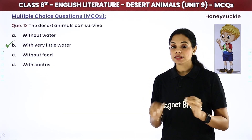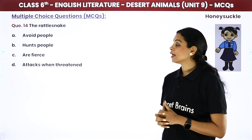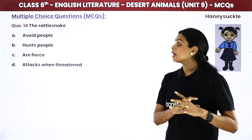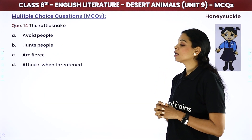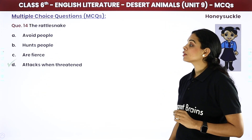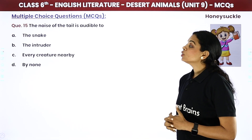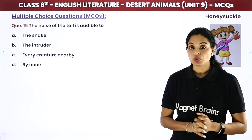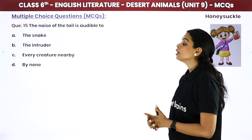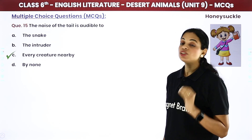The rattlesnake — rattlesnake एक तरीके का snake होता है। लोग इसे avoid करते हैं — यह लोगों को avoid करता है, या जब इसे डराओ सिर्फ तब attack करता है। The answer is: सिर्फ जब आप उनको डराते हो, तब ये attack करते हैं। The noise of the tail is audible to — यह noise किसे सुनाई देती है? The answer is: every creature — हर creature को सुनाई देती है।